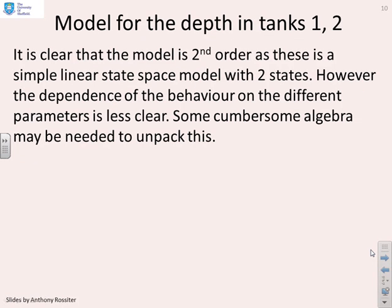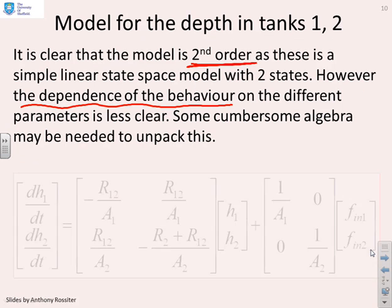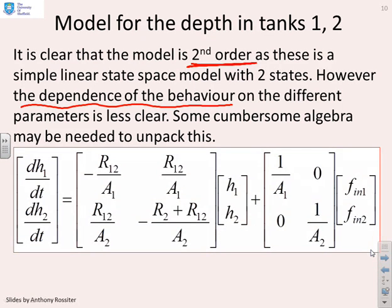Now, because this has got two states, it's clear that the model is still second order. However, and this is key, the dependence of the behavior on the different parameters is much less clear. If I say to you, how does changing, for example, R12 change the behavior of this model? And you might say, well, it's not quite as easy as all that because everything's coupled and mixed together. And you might need some cumbersome algebra to unpack this or a different set of tools.